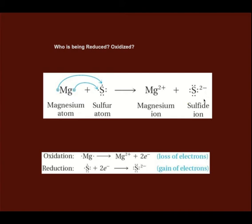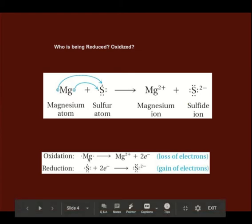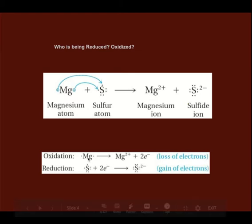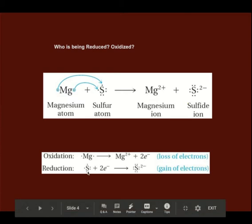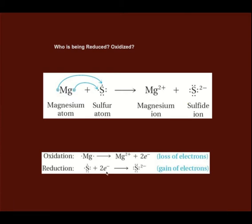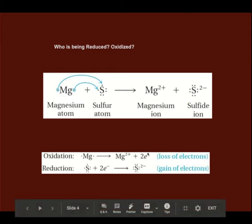And that connects to what we're learning — Leo says grr. Magnesium: loss of two electrons, oxidation. Sulfur gained two. Notice however many were lost — two — that's how many were gained.